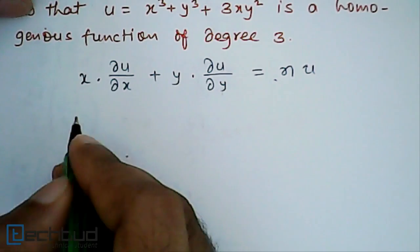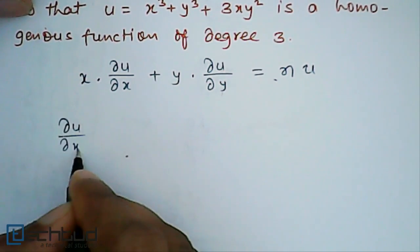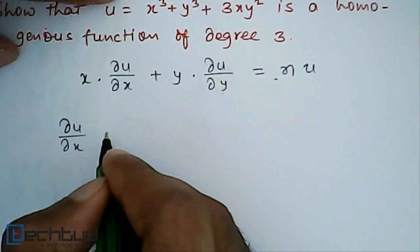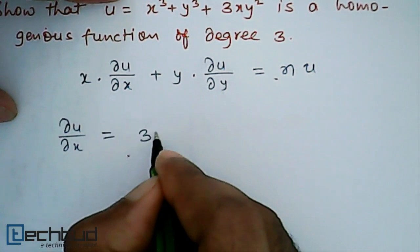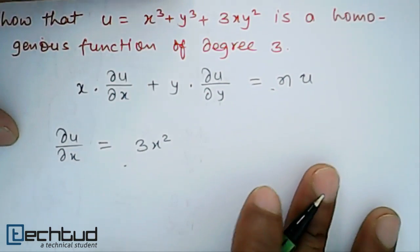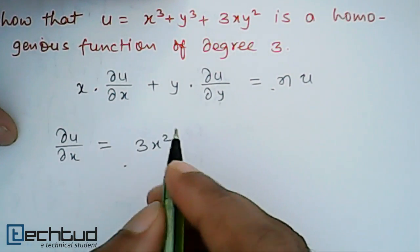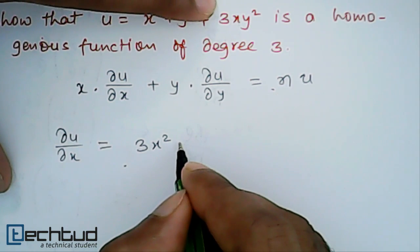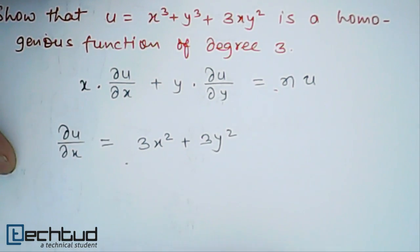First we will find del u upon del x. This means we keep y as a constant. So del u upon del x will be equal to 3x squared, and the y term gives 0 since y is constant, then the differentiation of the last term gives 3y squared.